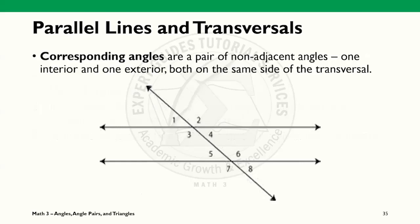The first angle property derived from transversals are corresponding angles. These angles are a pair of non-adjacent angles, one interior and one exterior, with equal measurement and on the same side of the transversal. Here we see that angle 1 is the exterior angle because it is an angle formed outside the parallel lines. Angle 5 is an interior angle as it is bound by the parallel lines. There are three other corresponding angles in this example. Angles 2 and 6, angles 3 and 7, and angles 4 and 8 are all corresponding angles.